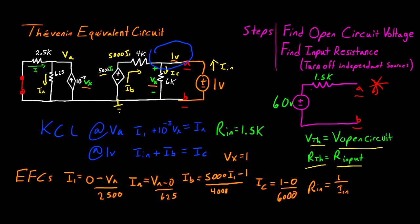In summary, finding the Thevenin equivalent circuit comes down to two steps. The first is calculating your open circuit voltage — this is your Thevenin voltage. The second is finding your input resistance. The most important thing not to forget is to turn off your independent sources while leaving your dependent sources as they are. From there, connect the test voltage or test current and solve for the input resistance — that is your Thevenin resistance. And this same process will work every time without exception.